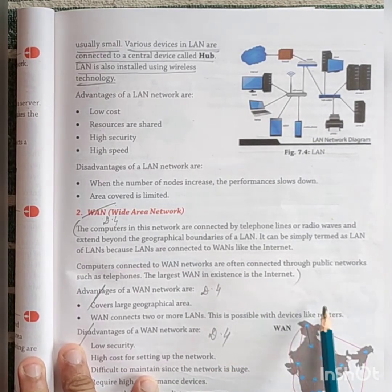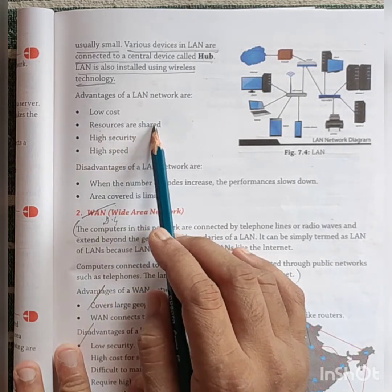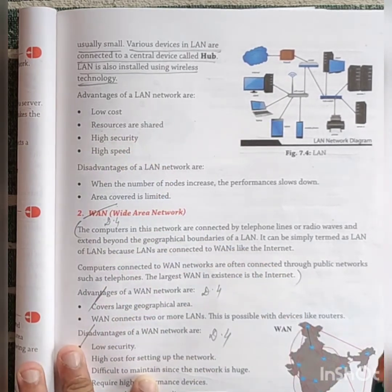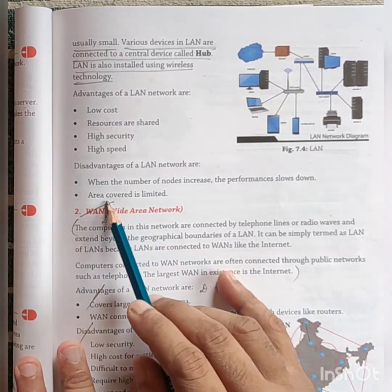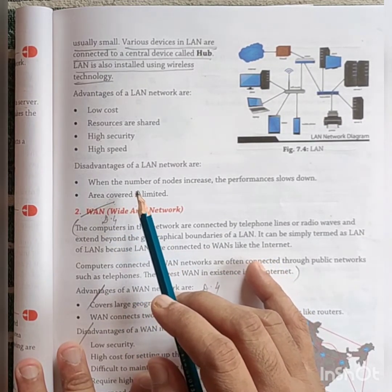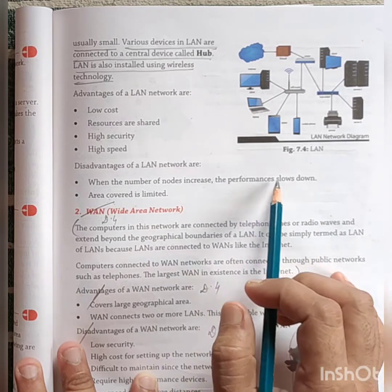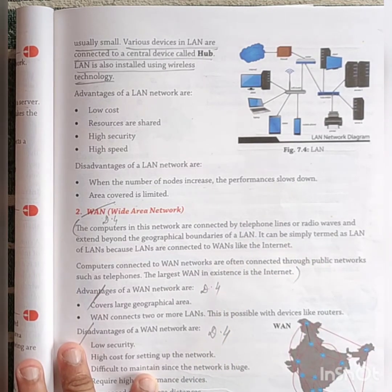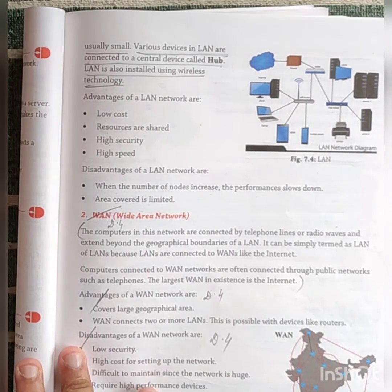LAN has advantages and disadvantages. Advantages: low cost, resources are shared, high security, and high speed. Disadvantages: area covered is limited — within a school, building, or organization. When the number of nodes increases, the performance slows down — for example, increasing from 10 nodes to 15 or 20 will decrease speed.